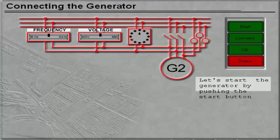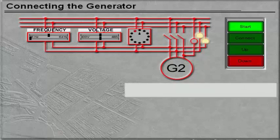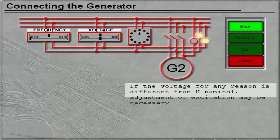Let's start the generator by pushing the start button. If the voltage for any reason is different from U-nominal, adjustment of excitation may be necessary.